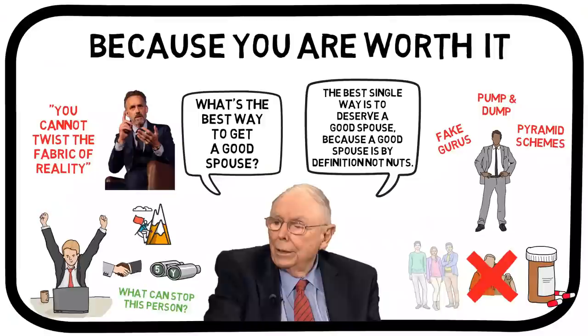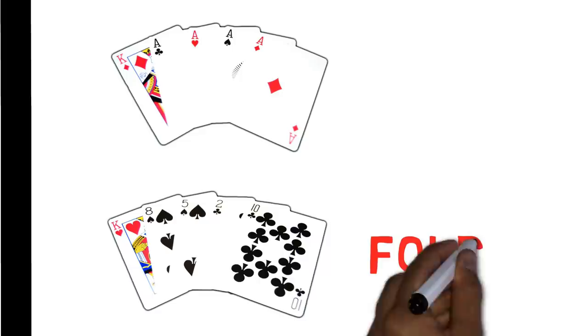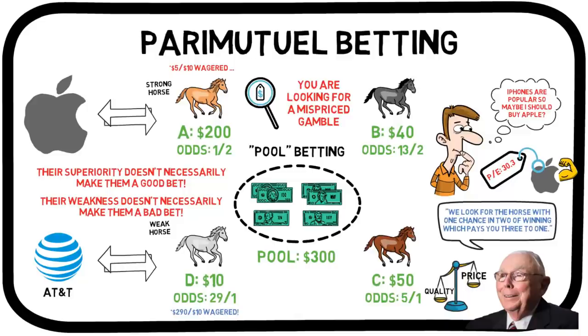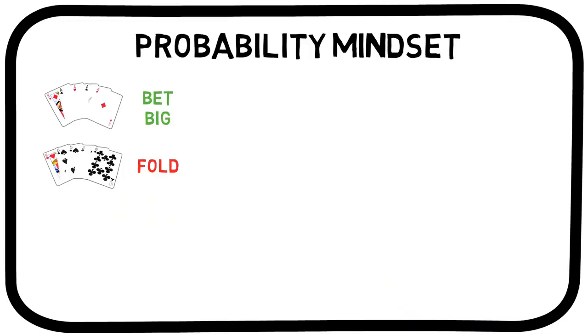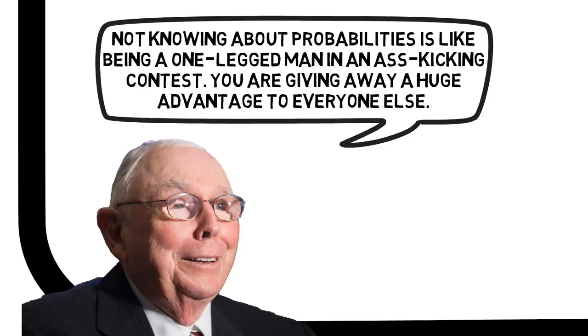Probability Mindset. When Charlie Munger was stationed in the army during World War II in Alaska, far away from any battles, he learned how to play poker well. With that, he discovered an invaluable investing takeaway: you must fold when the odds are stacked against you, and be willing to bet big when the odds are clearly in your favour. Munger has said that if you do not learn about probability theory, you are going through life like a one-legged man in an ass-kicking contest — it's doable, but you're giving away a huge advantage to everyone else.